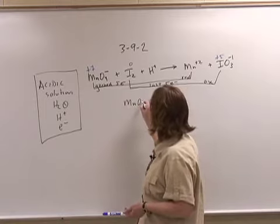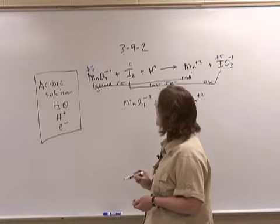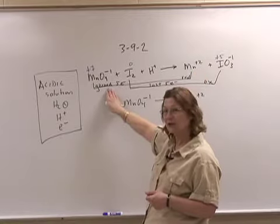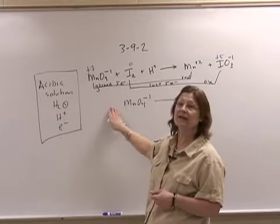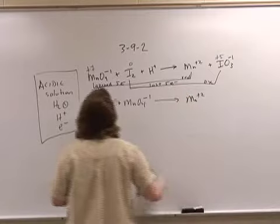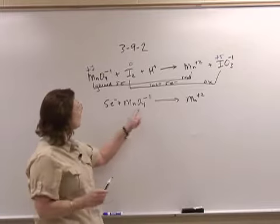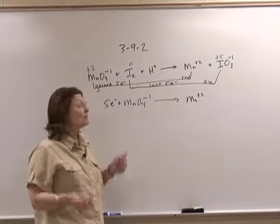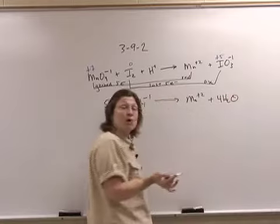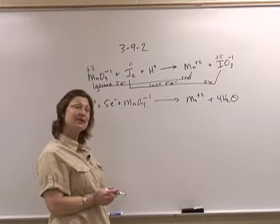Here I have MnO₄⁻ going to Mn²⁺. The charge changed from plus 7 to plus 2, so we gained 5 electrons. When we gain electrons, we put those electrons on the left side to balance the charge. By adding these 5 electrons, I have a plus 2 on both sides. Now I need 4 oxygens, and the only thing with oxygen I'm allowed to use is water, so I add 4 waters. As soon as I add 4 waters, I need 8 hydrogen ions to make that balanced. Then that half-reaction is balanced.